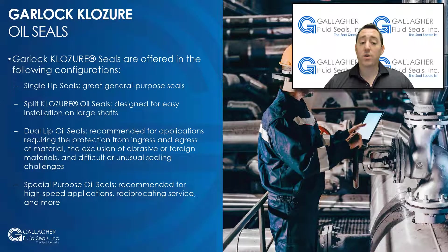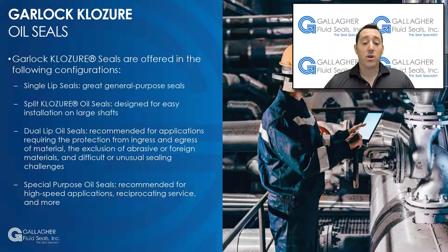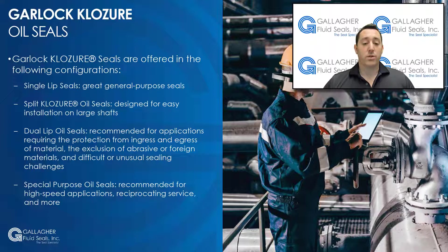Next, we are going to discuss Garlock closure seals. Garlock closure seals are offered in the following configurations. Single lip seals are ideal for most sealing applications and are general purpose seals available in a wide range of stock sizes. Split closure oil seals are designed for easy installation on large shafts without costly equipment teardown for seal replacement. Dual lip oil seals are recommended for applications requiring the protection from ingress and egress of material, the exclusion of abrasive or foreign materials, and difficult or unusual sealing challenges.